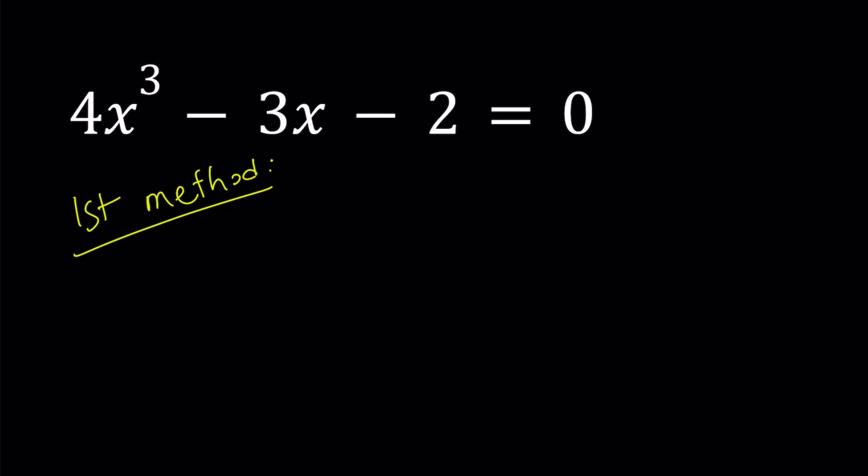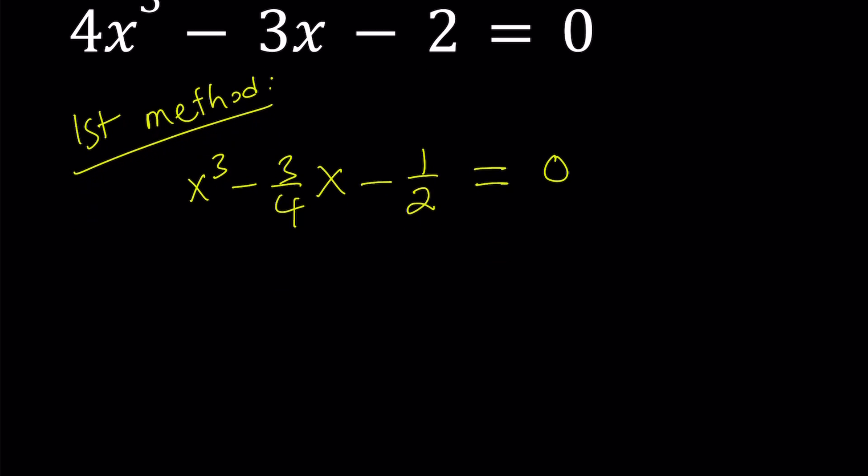For my first method, I'm going to divide both sides by 4 to get a monic polynomial. Monic means the leading coefficient is 1. 2 fourths is 1 half. So we get our monic cubic.